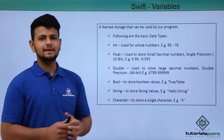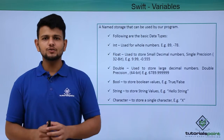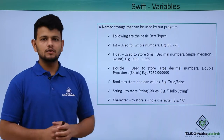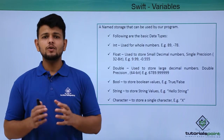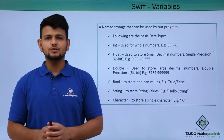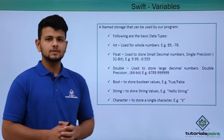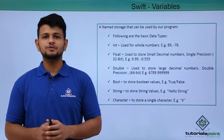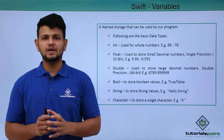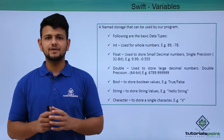We have the following basic data types in Swift language. Int is used to store integer values. Float is used to store small decimal values. Double is used to store large decimal values. Boolean is used to store true or false — logical values — for our program. String is used to store string values.